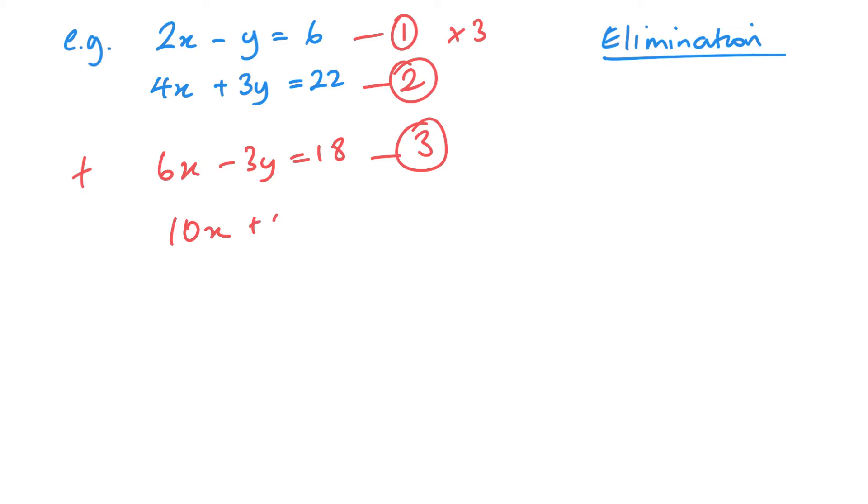So 6x plus 4x is 10x. 3y plus negative 3y is 0. 22 plus 18 is 40. So we have 10x equals 40, so x equals 4, which is what we got the first time. And then again, it's just a matter of subbing this into one of my equations. I'm going to put it into equation 1. So 2 lots of 4 minus y equals 6. 8 minus y equals 6, and you can see there that y is 2. I won't do the check in this one because I'm just doing it a second time, but just to show you you could have made the y's equal.